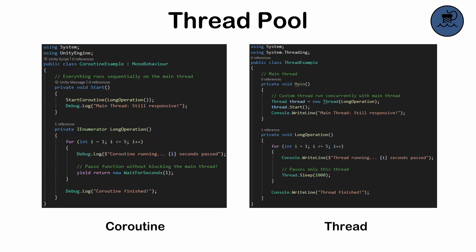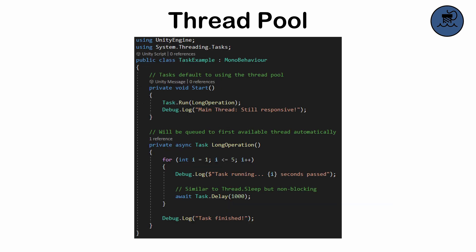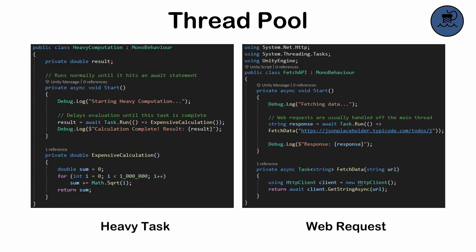Thread pool. Instead of creating a new thread for every task, you reuse a pool of threads, similar to object pooling. This is widely used in almost every application that handles multiple tasks, like processing web requests or handling game logic in parallel. Its simplicity and efficiency make it an essential starting point for learning about concurrency.